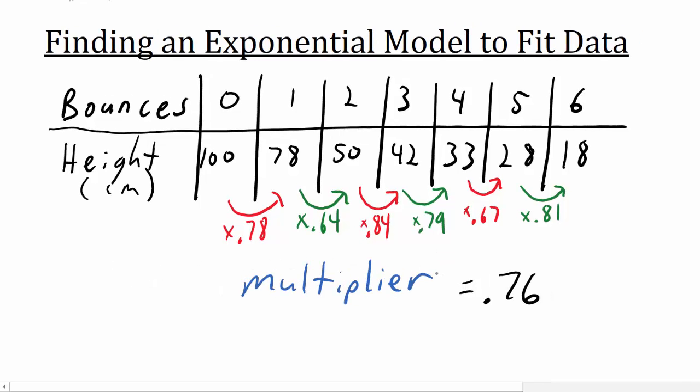This multiplier says that each bounce is about 76% as high as the bounce before. Or in other words, it loses about 24% of its height each time, because 1 minus 0.76 equals 0.24.